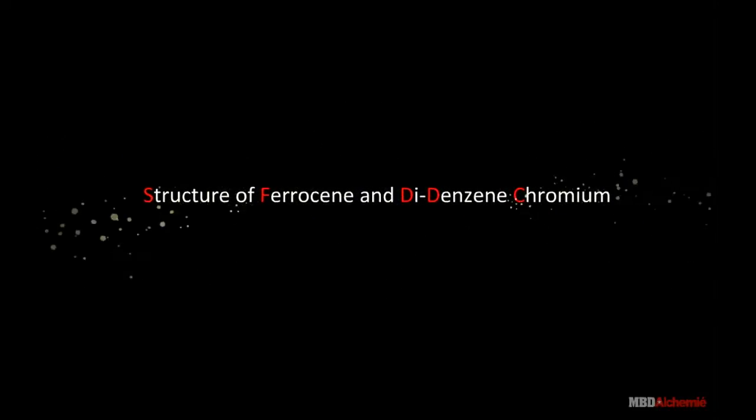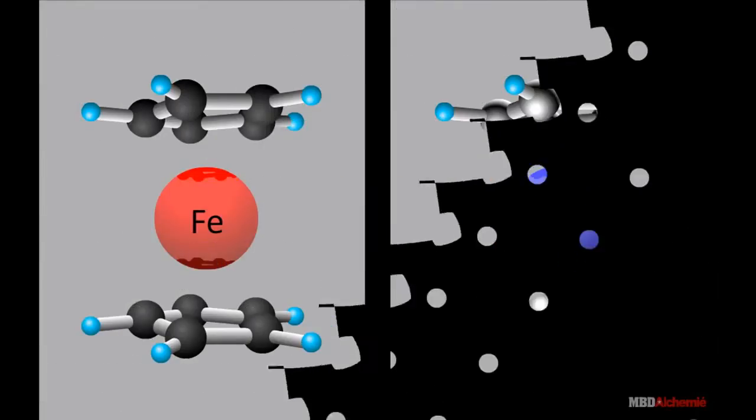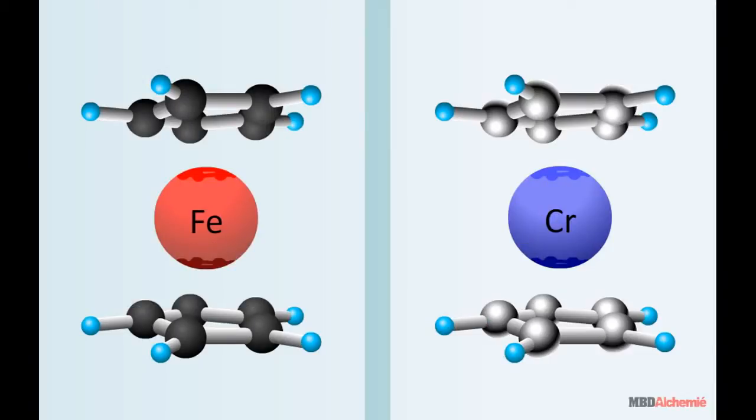Structures of Ferrocene and Dibenzene Chromium. Ferrocene and Dibenzene Chromium are organometallic compounds with the formulae Fe(C5H5)2 and Cr(C6H6)2, respectively.